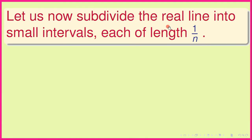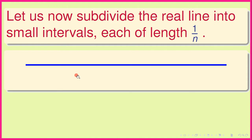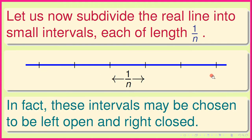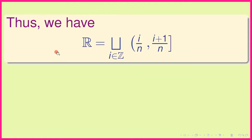Let us now subdivide the real line into small intervals each of length 1/n. We subdivide this real line into small intervals, and these small intervals may be chosen to be left-open and right-closed. In that case, we have the set of real numbers R equal to the disjoint union of intervals of the form (i/n, (i+1)/n], where i runs over the set of integers.